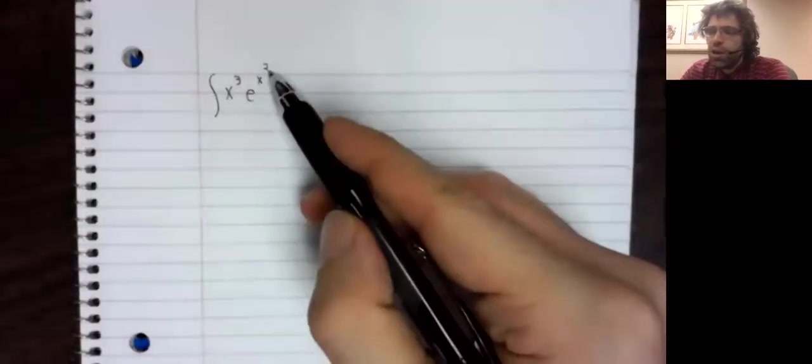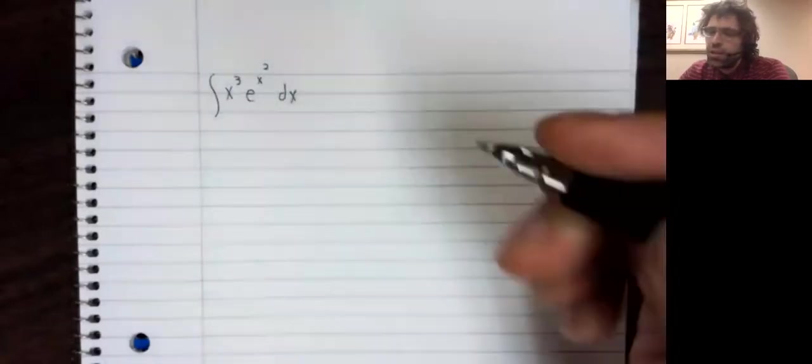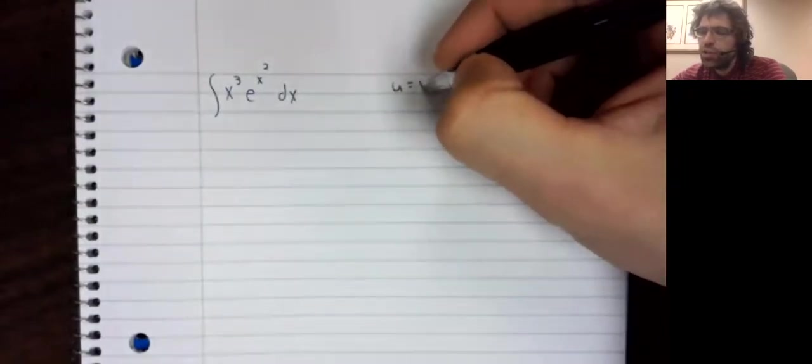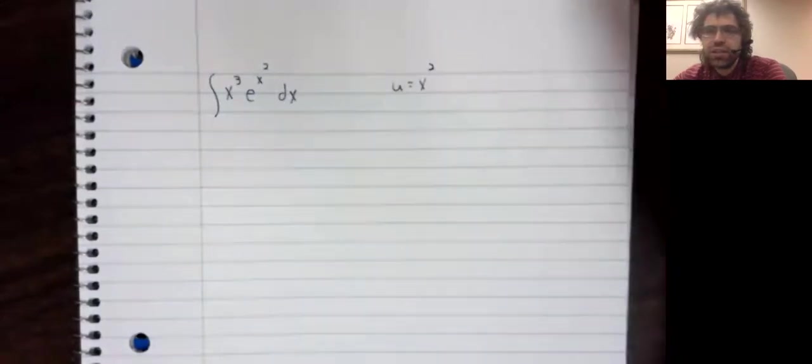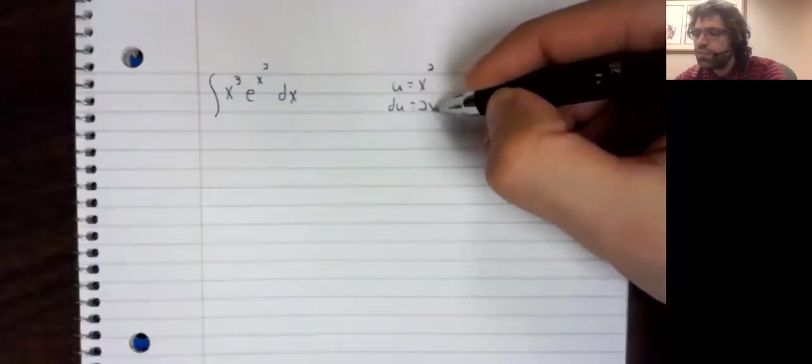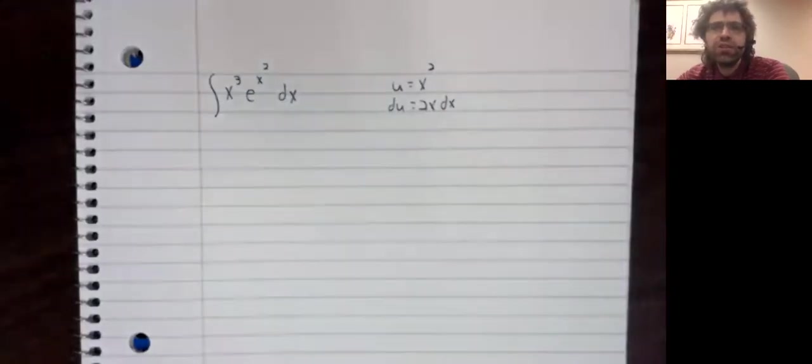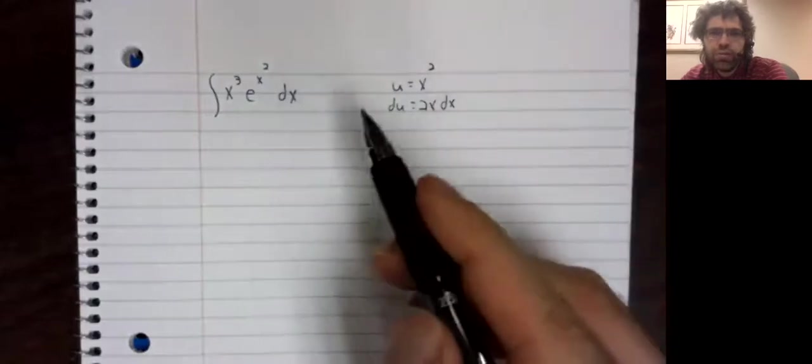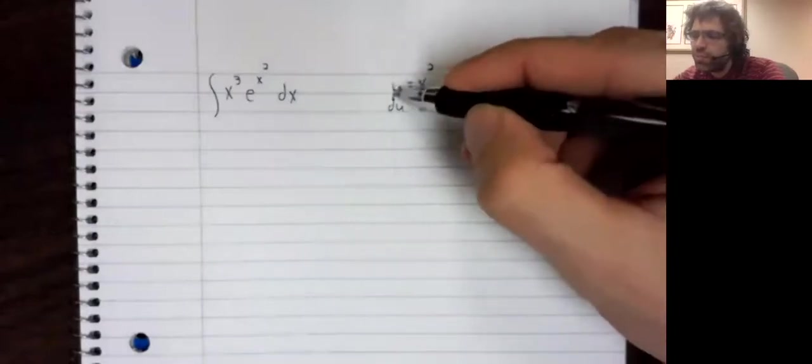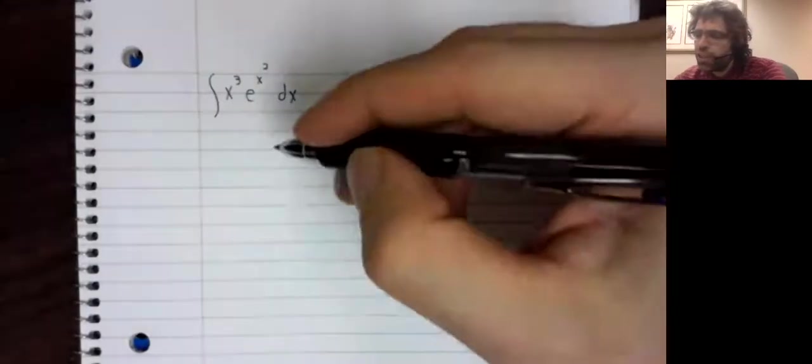This is composition, e to the x squared. So it wouldn't be outrageous to try u substitution instead of integration by parts. U substitution does fail, though. We have an x cubed, not an x. So we'll try integration by parts.